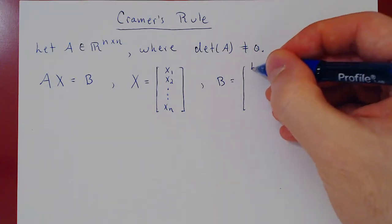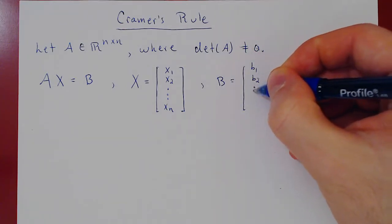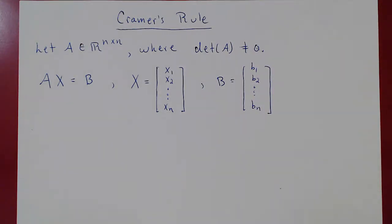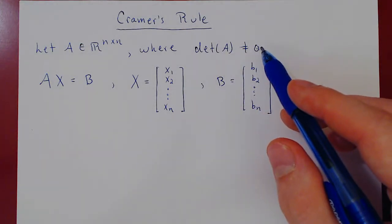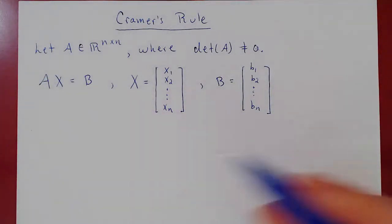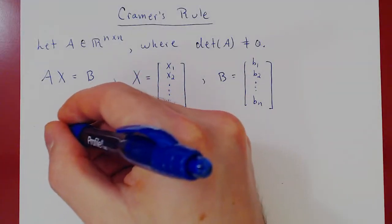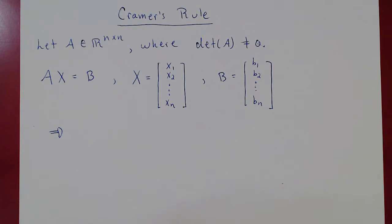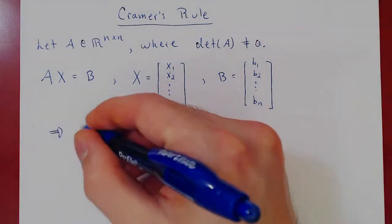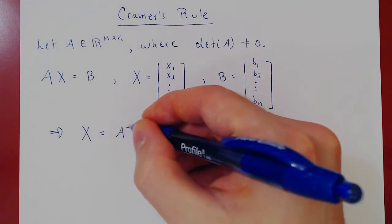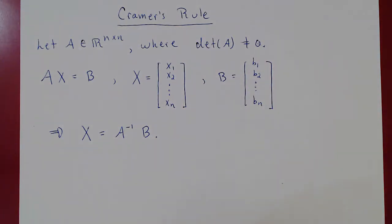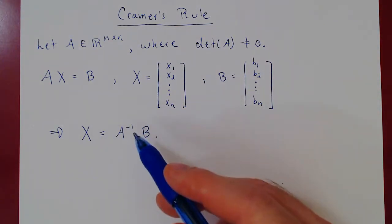And b is the column vector of constants: b1, b2, up to bn. Since the determinant of A is not zero, A is invertible, and by consequence the system has a unique solution. If we multiply on the left of both sides by A-inverse, the unique solution vector x is given by A-inverse times b.